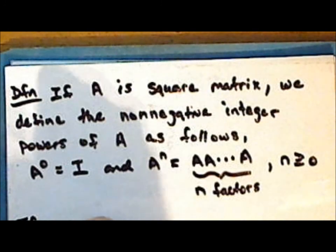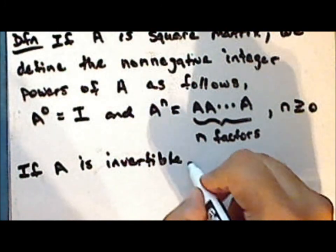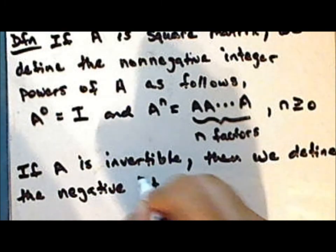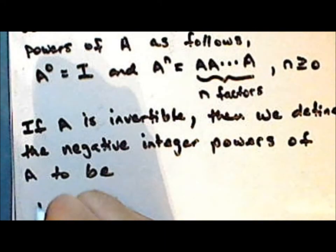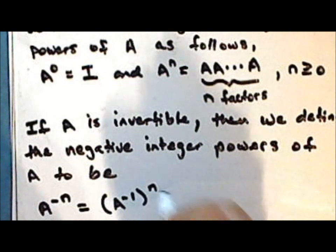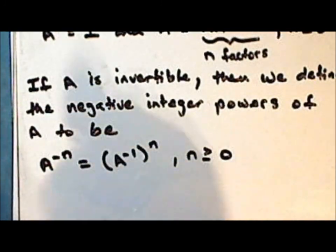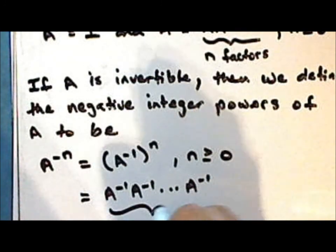If the matrix A is invertible, then we define the negative integer powers of A: A to the power of negative n is the inverse of A to the power of n, where n is a non-negative integer. So this is the product of the inverse of A with itself so that there are a total of n factors.